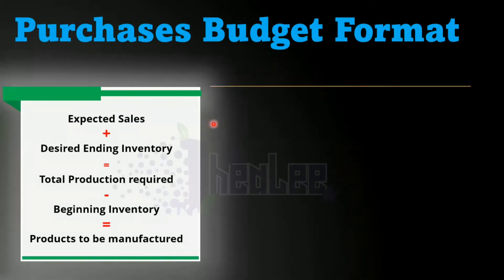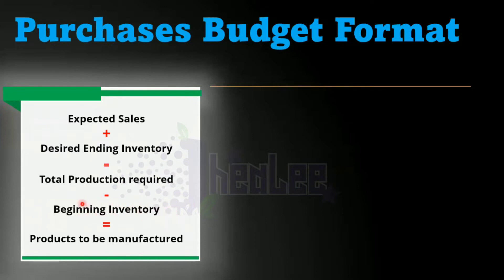For the Production Budget, you begin with expected sales. You add in your desired ending inventory, because you want to know the total amount of units required for the budgeted period. From that, you subtract your beginning inventory.